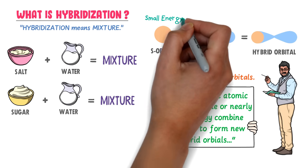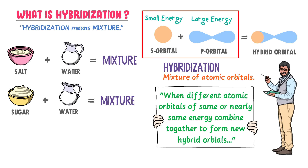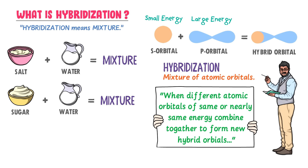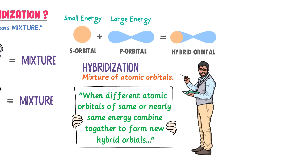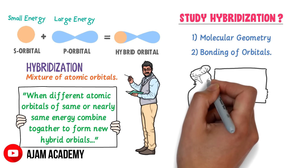For example, the energy of S orbital is smaller than P orbital, but nearly they have the same energy, so they combine together to form hybrid orbitals. Hybridization of atomic orbitals teaches us two important concepts: it shows us molecular geometry or shape of the molecules, and secondly, it shows us the bonding of atomic orbitals.